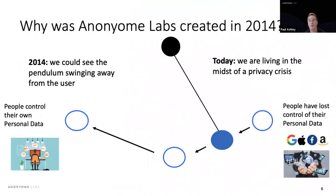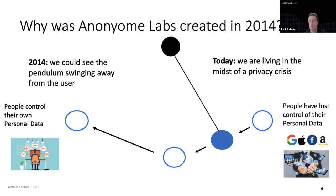What we're trying to do as a company is move the pendulum back and make it more private for people to exist in the world. You can't disconnect from the grid — you have to live in this world of connectivity, but how do you be more private in doing it? The reason we came into decentralized identity is because, in my opinion, decentralized identity is the most important technology for privacy for the next 10 years.